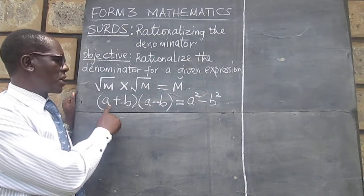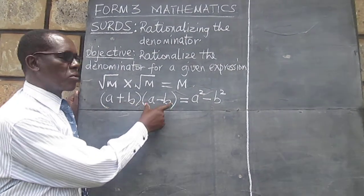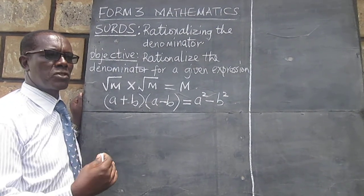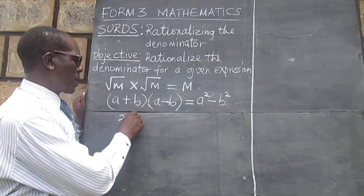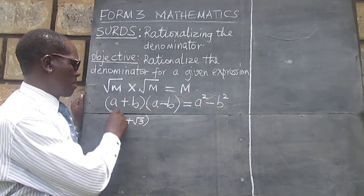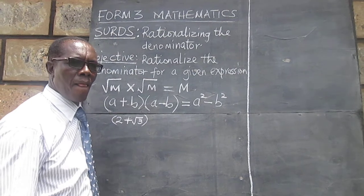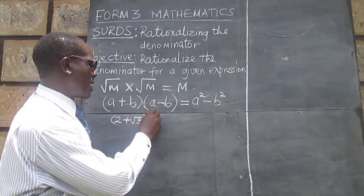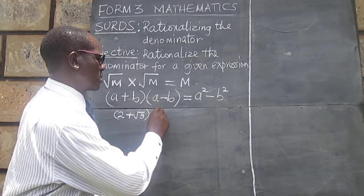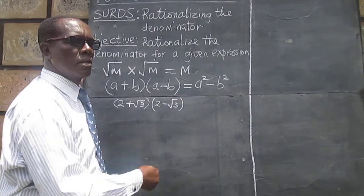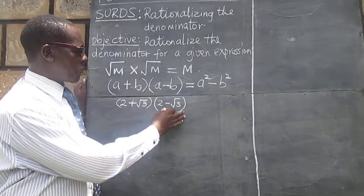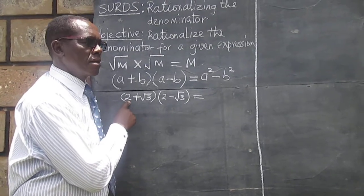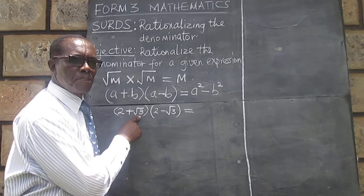So the only difference between what is in this bracket and what is in this bracket is the negative sign. So again if we have an expression like 2 plus root 3 appearing in the denominator, we will need to multiply both the denominator and the numerator by the conjugate, that is 2 minus root 3.